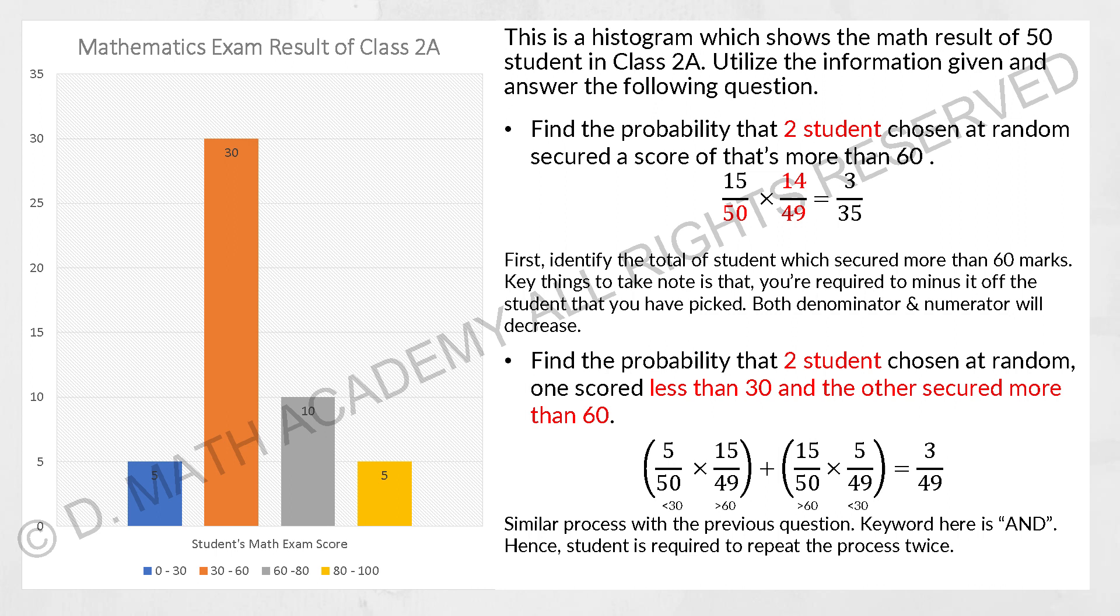So find the probability that 2 students chosen at random, one scored less than 30 and the other secured more than 60. So let's say we use the one that scored less than 30 first, it will be 5 over 50 multiplied by those who are more than 60 which is 15 over 49, and plus 15 over 50 times 5 over 49. So your final calculation is 3 over 49. So that will be it for the probability topic. I hope you have a better understanding after watching this video.